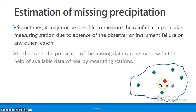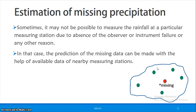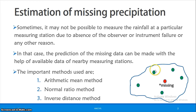In this situation, we need to predict the missing rainfall data at that rain gauge. There are different methods to do so: the arithmetic mean method, the normal ratio method, and the inverse distance method. We will estimate the missing data using each of these methods.